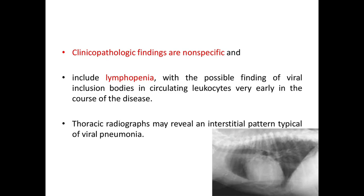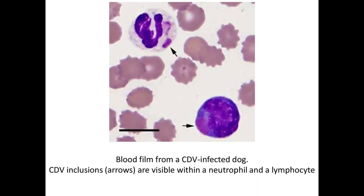Clinical pathologic findings are non-specific and include lymphopenia, with the possible finding of viral inclusion bodies in circulating leukocytes very early in the course of the disease. Thoracic radiographs may reveal an interstitial pattern typical of viral pneumonia. You can see a blood film from a CDV-infected dog, with inclusion bodies visible within a neutrophil and a lymphocyte.